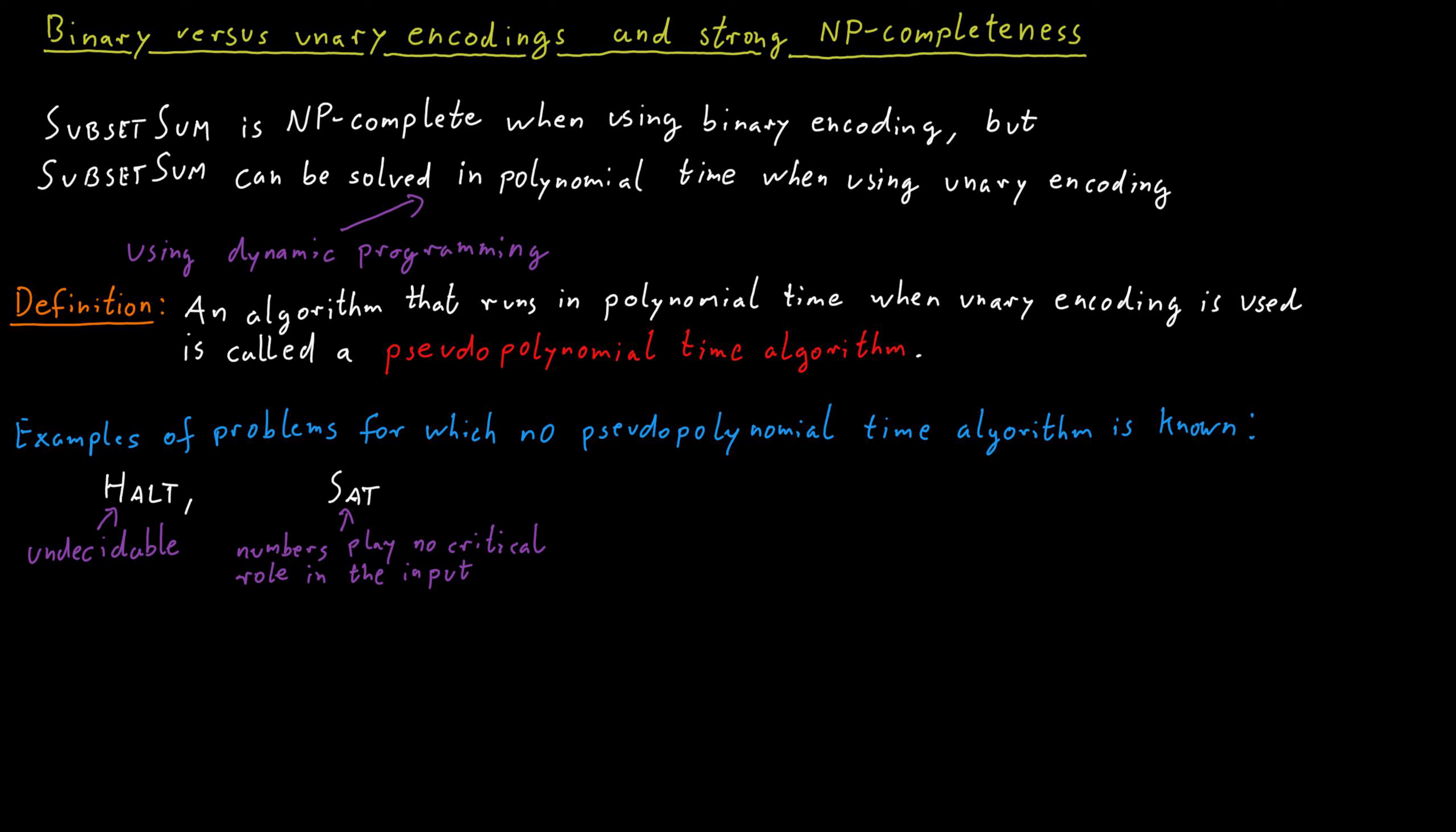Maybe the most interesting example out of the three I will give is the traveling salesperson problem. So the traveling salesperson problem does actually critically have numbers in the input, namely the distances between different cities. But the problem remains NP-complete, even when those numbers in the input are encoded in unary. And because it remains NP-complete, unless P equals NP, there will be no polynomial time algorithm, even in that case. So the traveling salesperson problem is not believed to have a pseudopolynomial time algorithm that solves it.